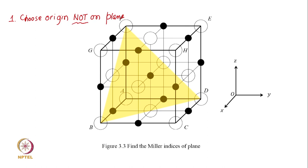If you have chosen your origin on the plane, if I choose for this plane B or D as my origin, I am done. I will not get the miller indices of this plane. I just cannot get. Why? Because the second step is find the intercepts, find the intercepts on the three axes.